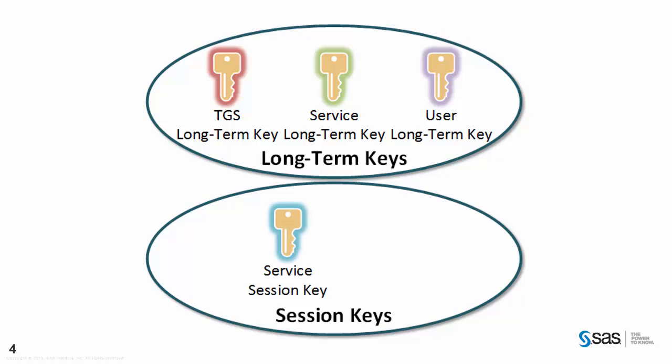For session keys, we first have a session key specific to the end user's connection to the service. This service session key will have a short lifetime and will be unique to the individual end user's connection to the service. Our final key is the ticket granting service session key — again a short-lived key associated with the end user's individual connection with the ticket granting service. In the next sections we will see how the different keys are used to encrypt messages sent between the three heads of the Kerberos system.